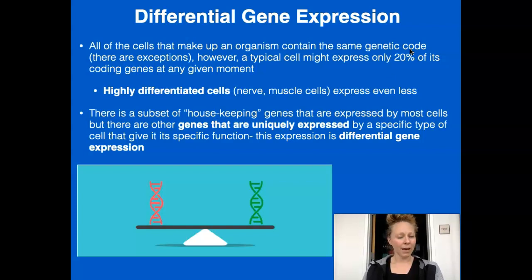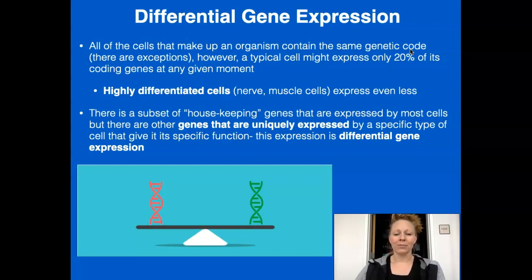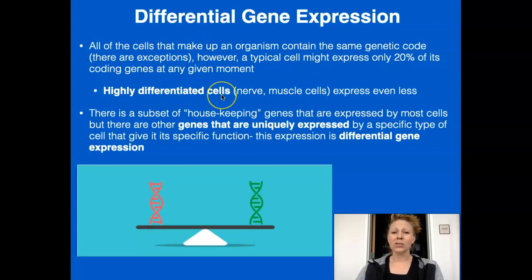And of that coding DNA, at any given moment, only about 20% of it is being expressed. It's amazing what we have in each one of our cells. Highly differentiated cells — your cells that do very specific jobs like nerve cells and muscle cells — are highly differentiated.